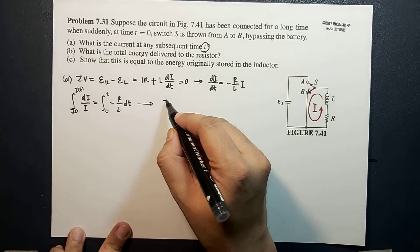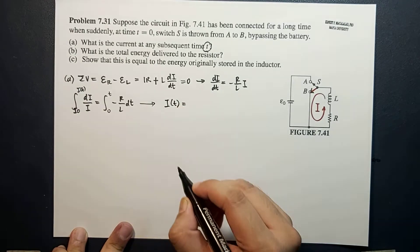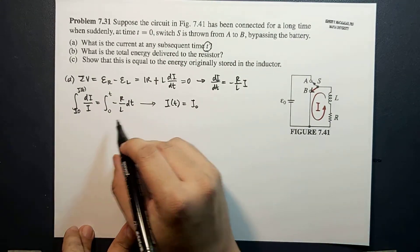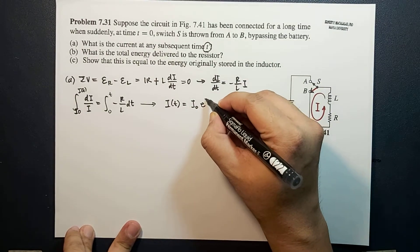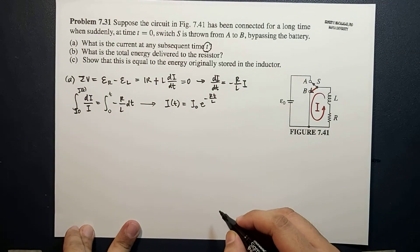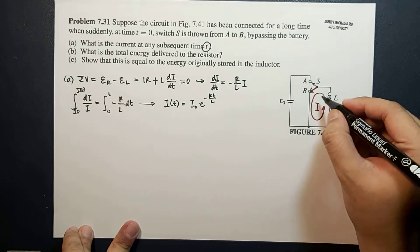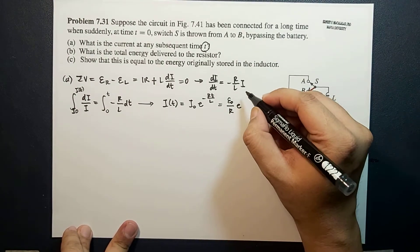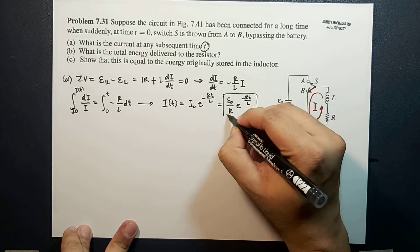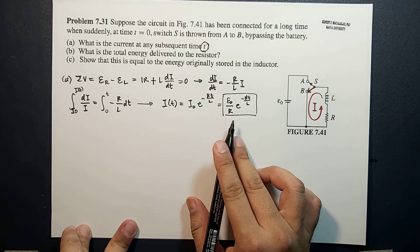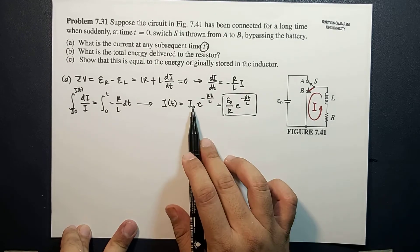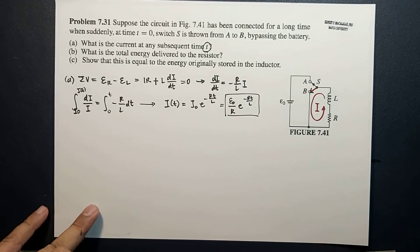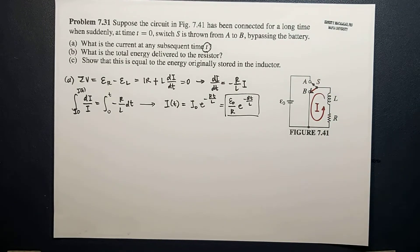Solving this differential equation, the current as a function of time is I(t) = I₀ e^(−Rt/L). This original current I₀ is the current when the battery is still connected, which by Ohm's law equals ε₀/R. So the current at any subsequent time t is I(t) = (ε₀/R) e^(−Rt/L). It only changes once the switch is thrown from A to B.